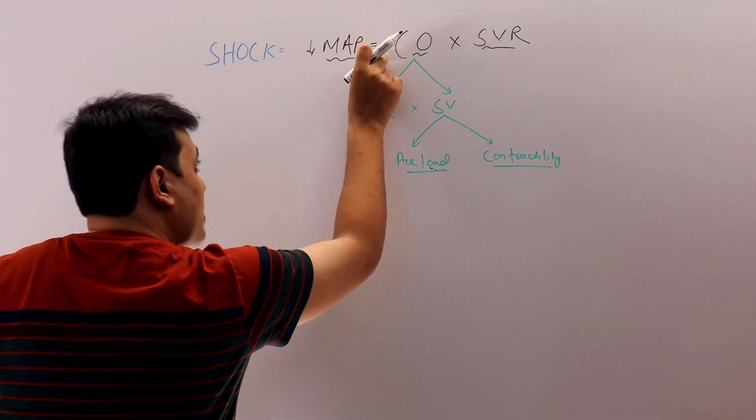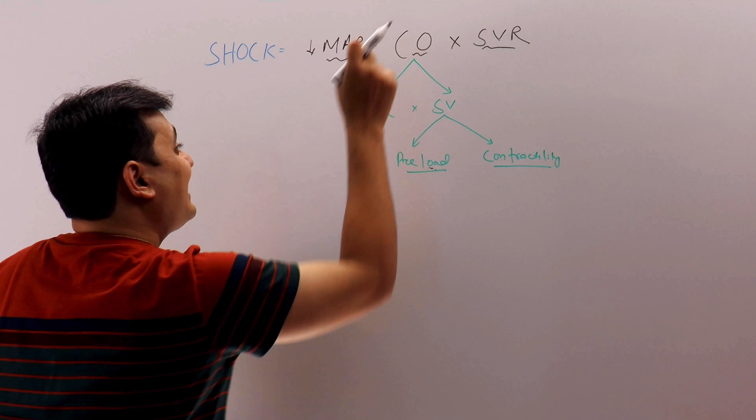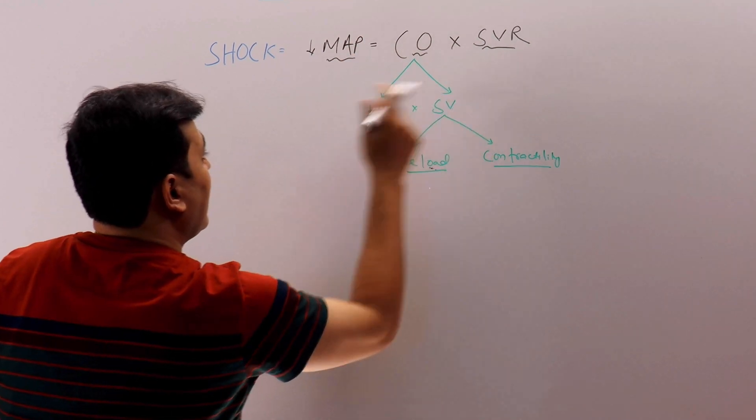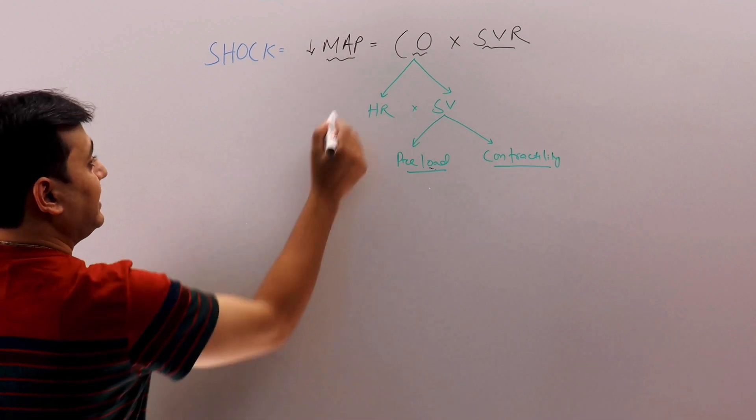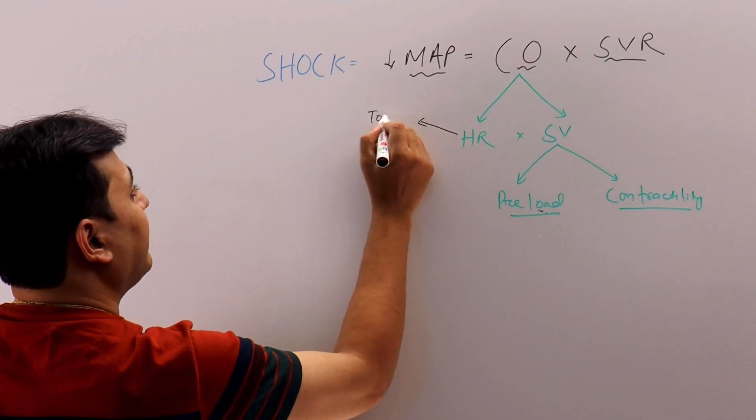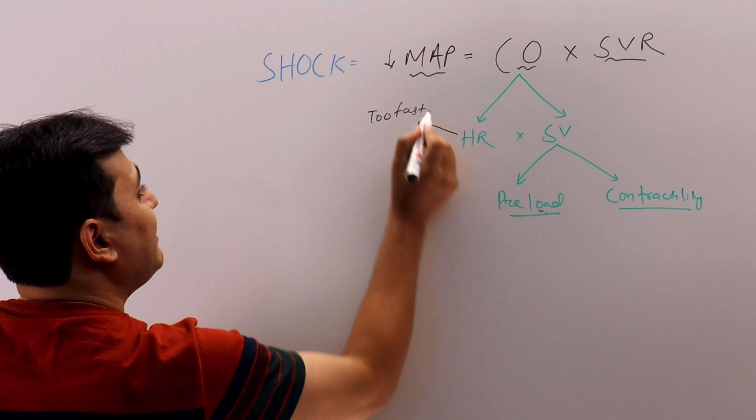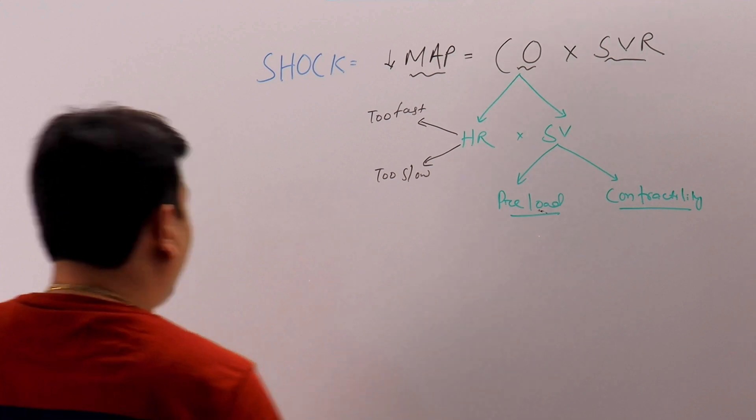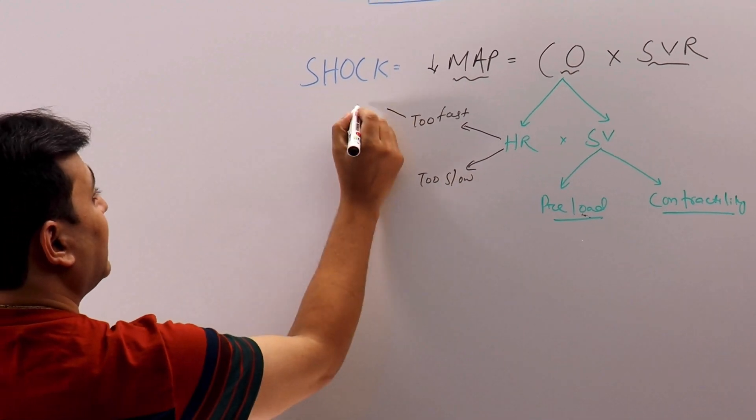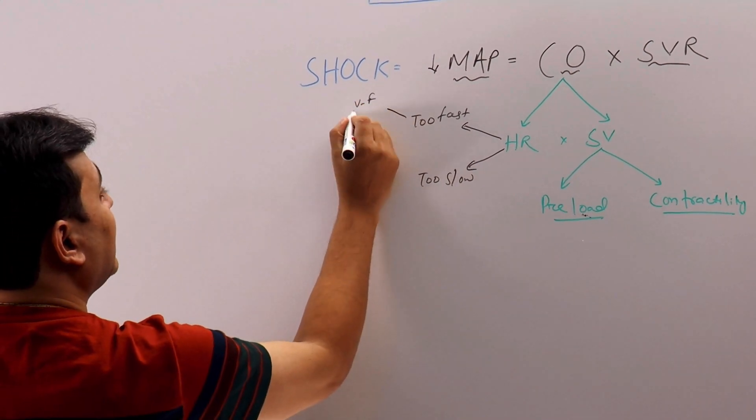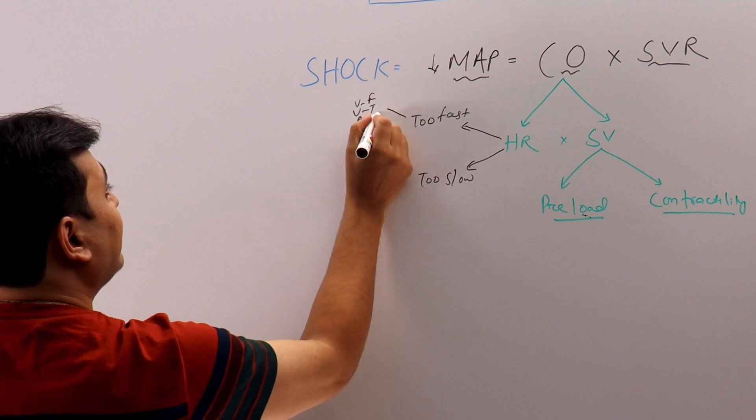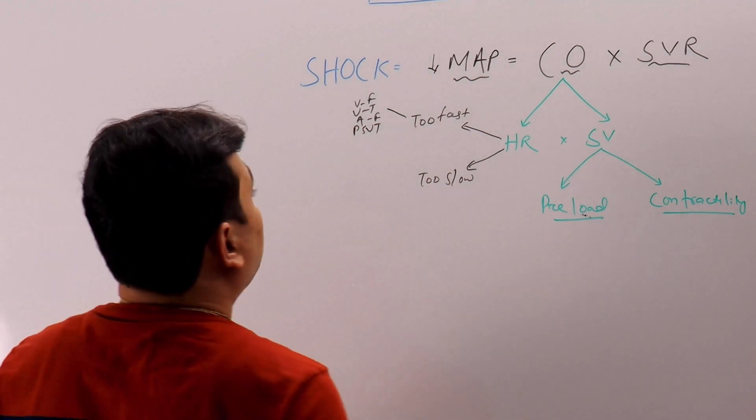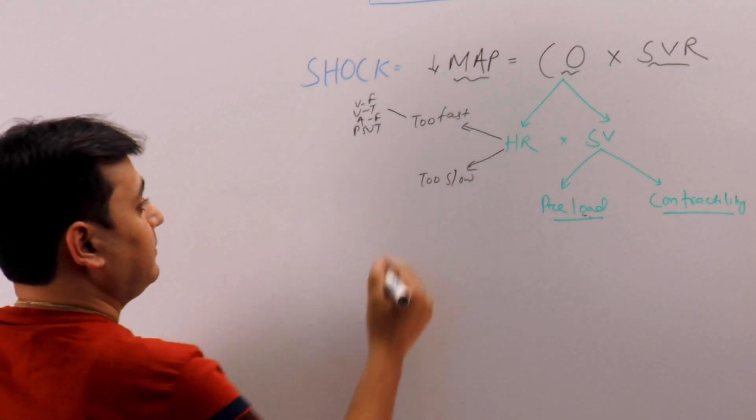So when the cardiac output is down, it can be down because of the heart rate or because of the stroke volume. Heart rate can have two kinds of things: either it can be too fast or it can be too slow. Too fast - what are the differentials here? We have ventricular fibrillation, ventricular tachycardia, atrial fibrillation, PSVT - any kind of tachyarrhythmia can produce a hemodynamically unstable condition.